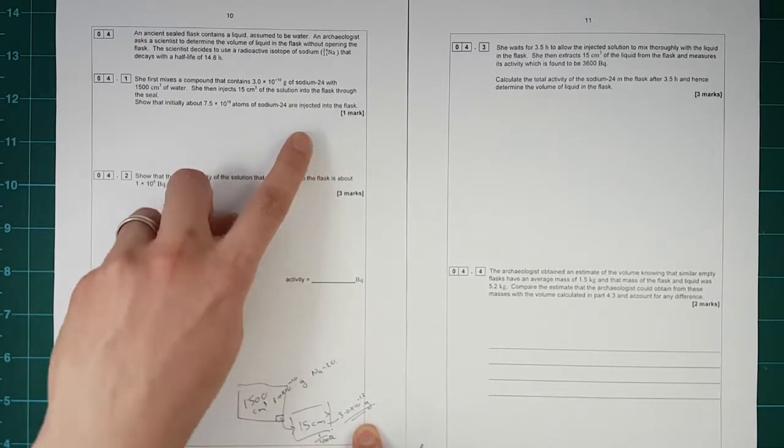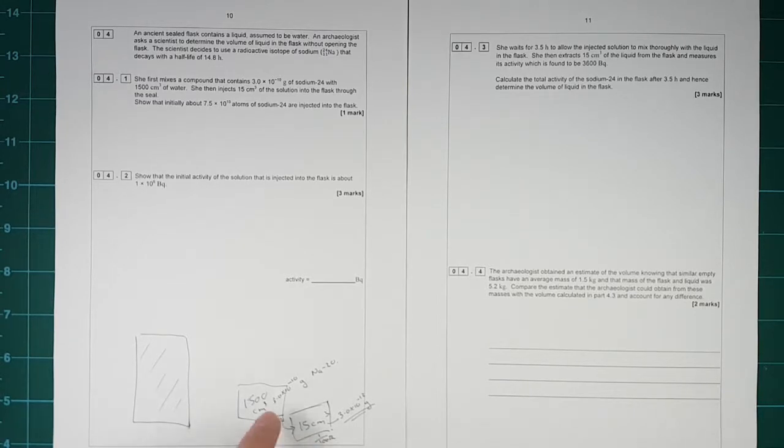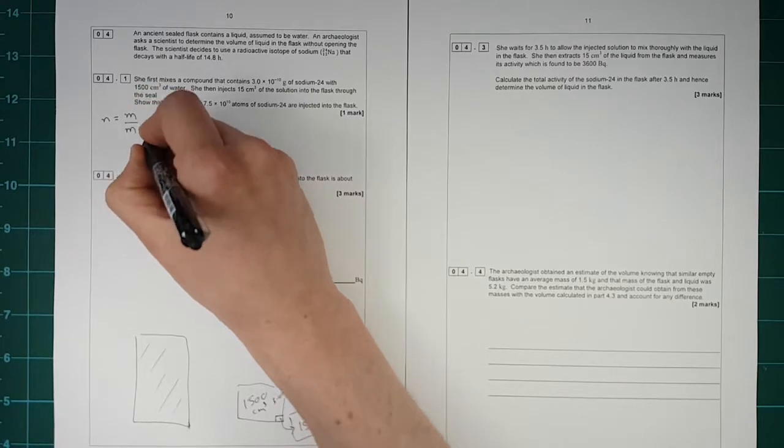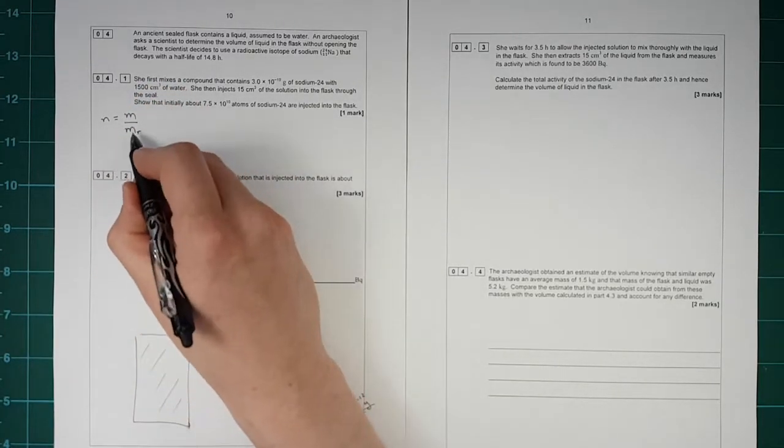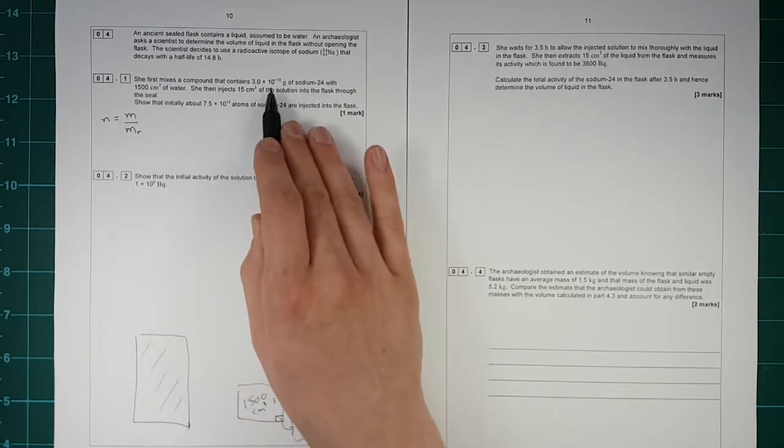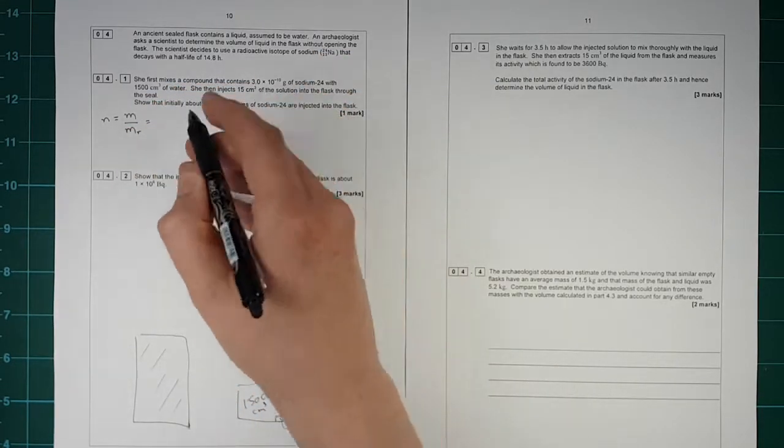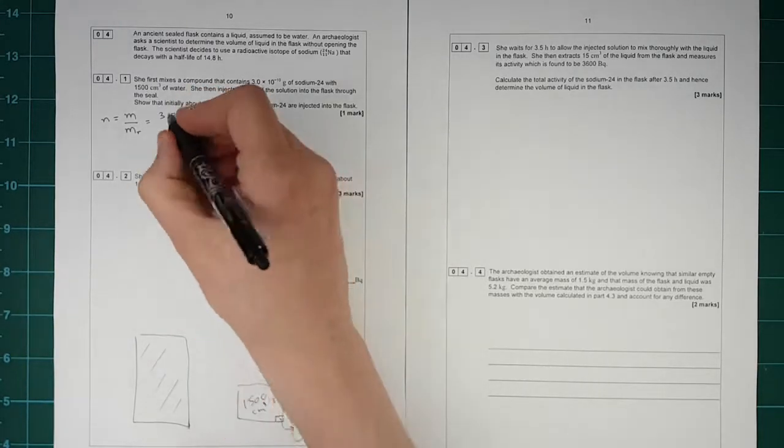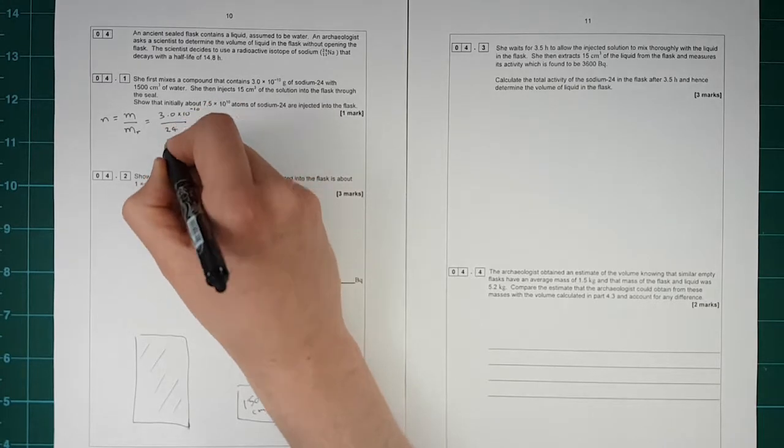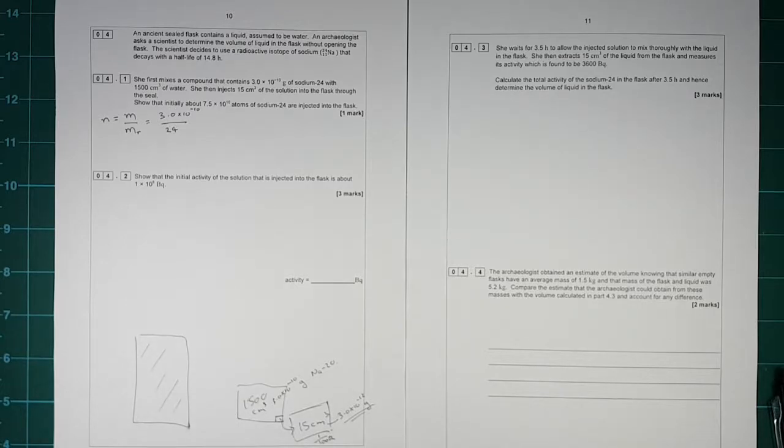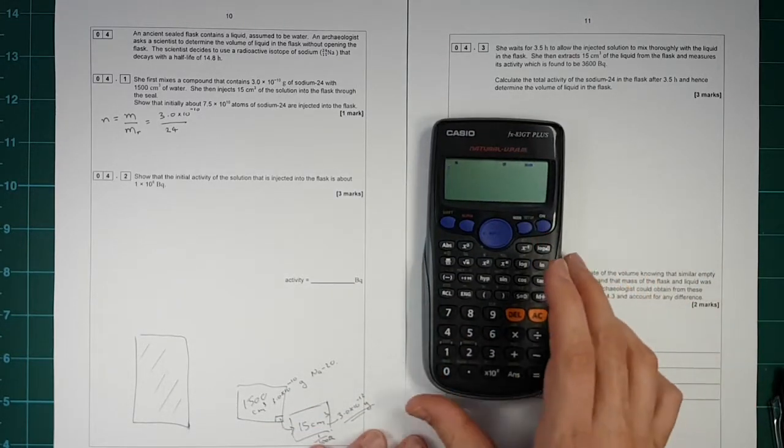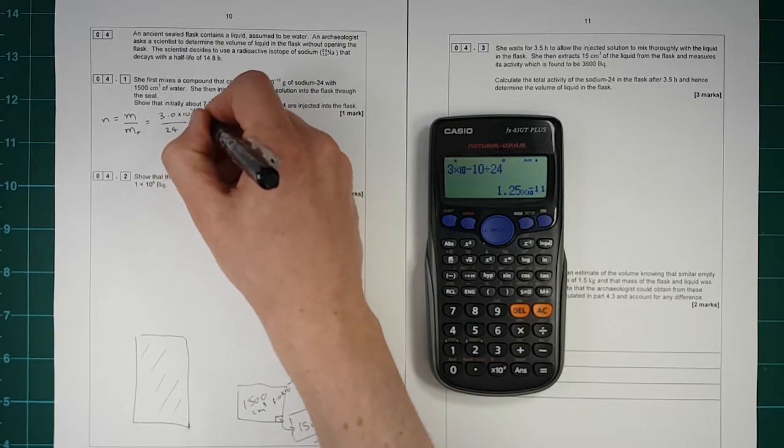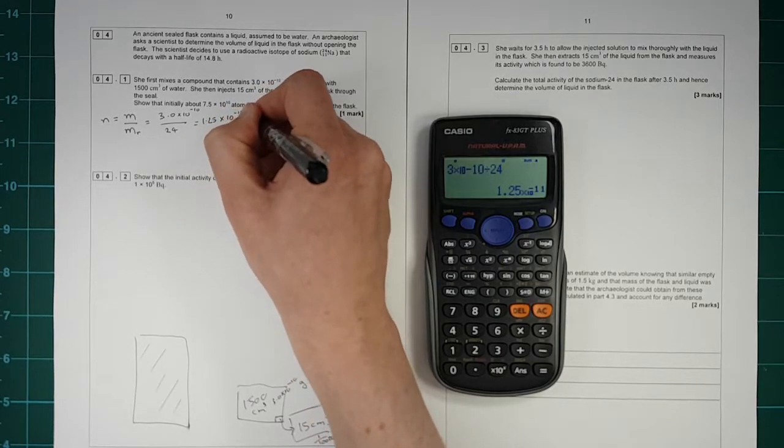So show that initially that many atoms are injected into the flask. Remember it's this 15 centimeters cubed which is injected into the flask. So we need the number of moles. So the number of moles will equal the mass of material that we have divided by the relative atomic mass. And remember, rather bizarrely, this one's a weird one, it's in grams rather than in kilograms. So that's why that's given to you in grams. So the mass of material is 3.0 times 10 to the minus 10. I'm going to divide by the hundred at the end. Divided by the relative atomic mass, which is 24, because it's sodium 24. And we get that as the number of moles. So the number of moles is 3 times 10 to the minus 10 divided by 24. So it's 1.25 times 10 to the minus 11 moles.